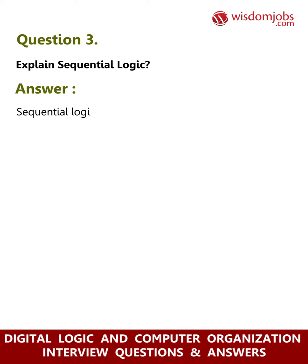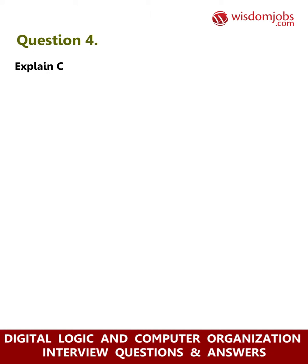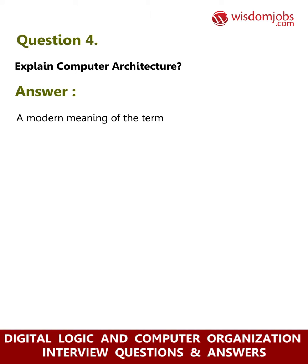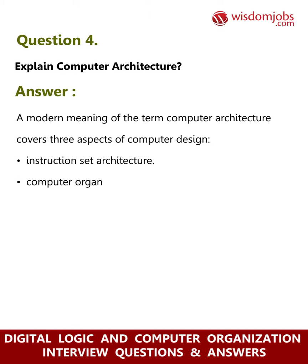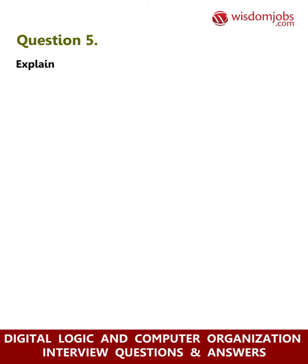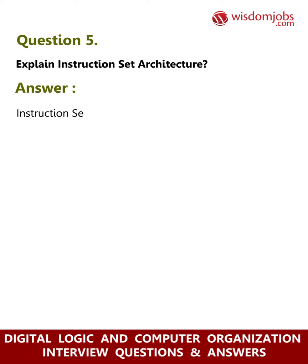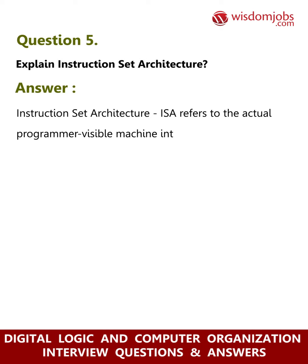Question 3: Explain sequential logic. Answer: Sequential logic stores data — registers in a CPU, RAM, and so on store data. Question 4: Explain computer architecture. Answer: A modern meaning of the term computer architecture covers three aspects of computer design: instruction set architecture, computer organization, and computer hardware.